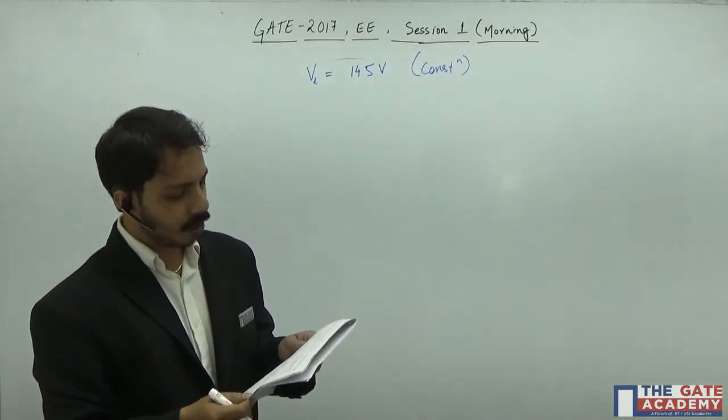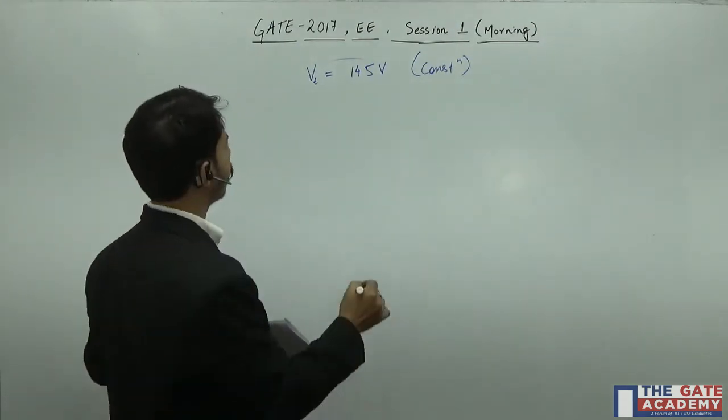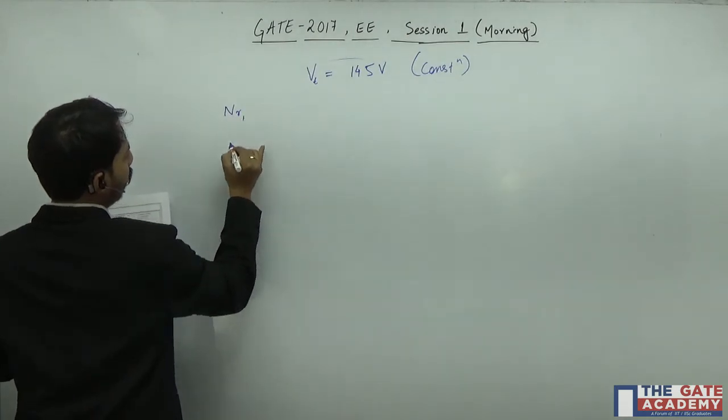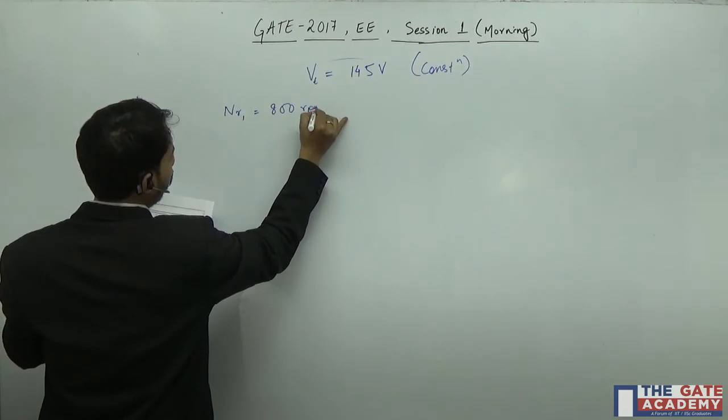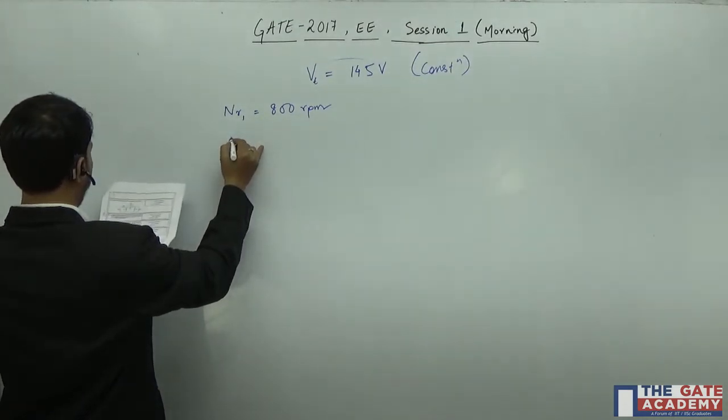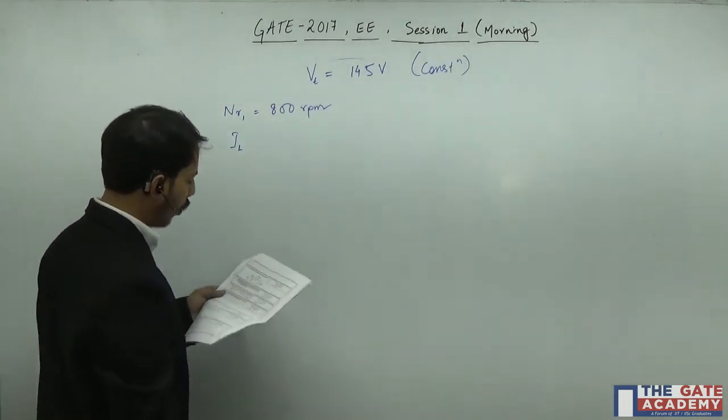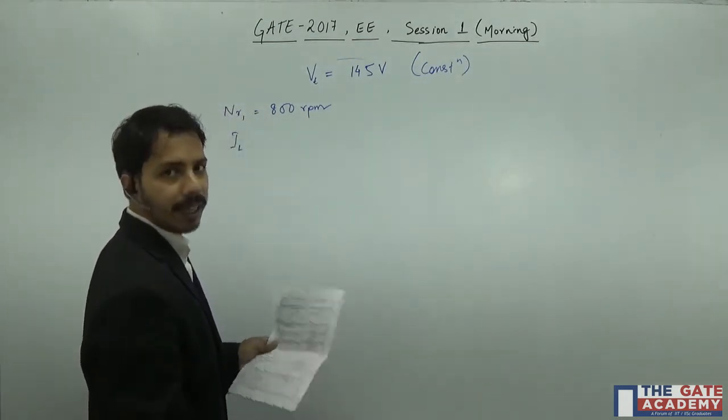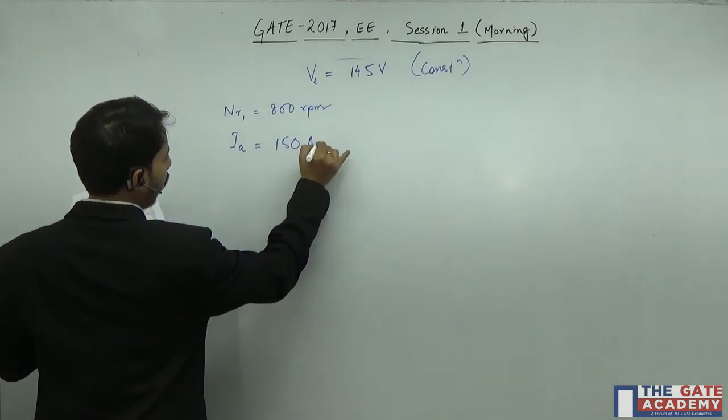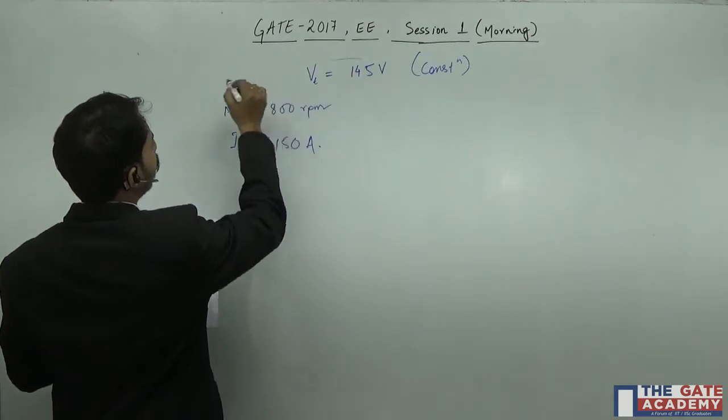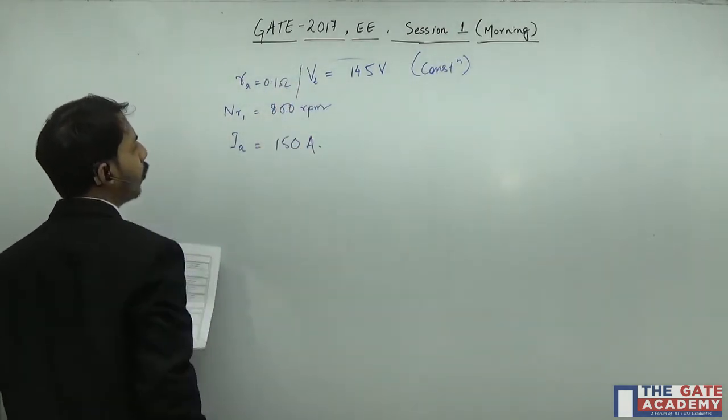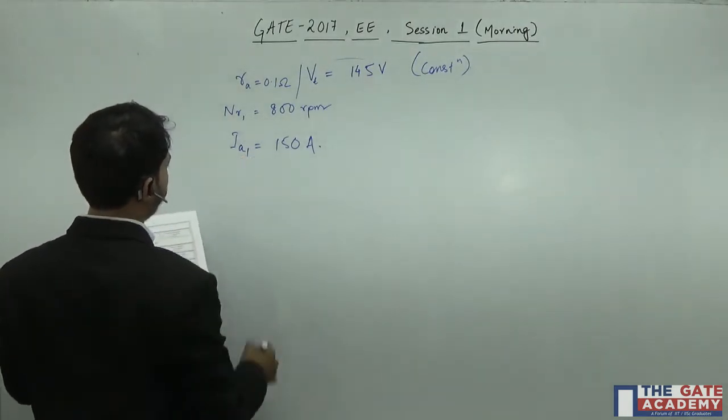Now let's see what values are given. There are two conditions. First condition: when N1 is 800 rpm, the line current - since it's a separately excited DC generator, the line current and armature current are the same - the armature current here is 150 amps. Also, the armature resistance is given to be 0.1 ohm.